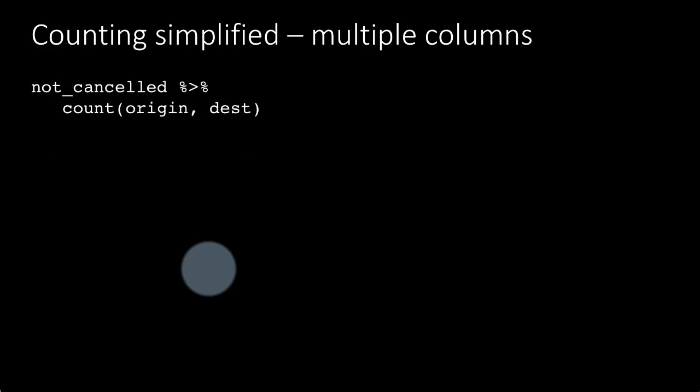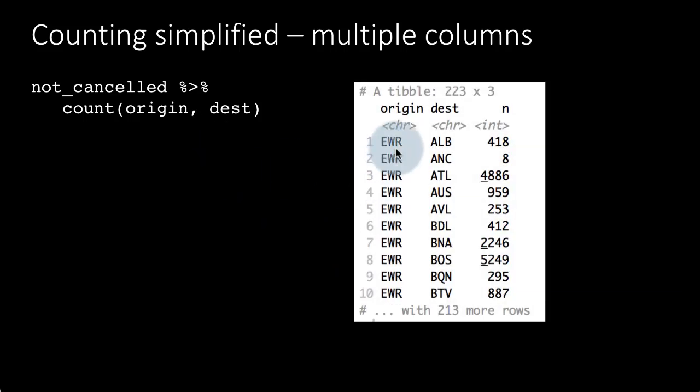You can also count by multiple columns. So if you want to take the origin destination pairs, origin could be any one of the three airports. If you want to take the origin destination pairs and count how many flights operated in each of those pairs, you can do that. For example, EWR to ALB 418 flights, EWR to BNA was 2246 flights etc. Notice that the Atlanta flights of 16,000 was obviously made up by EWR to Atlanta and then JFK to Atlanta etc. So the point is you can group by multiple columns as we've seen many times before, and therefore you can also count by multiple columns. And again whenever you do a count the default column name is always n.